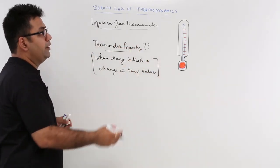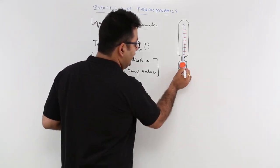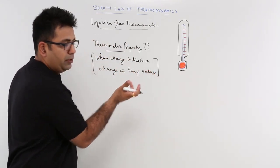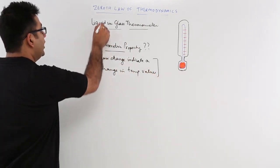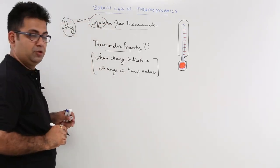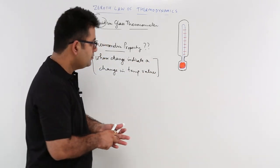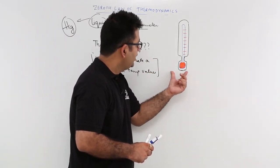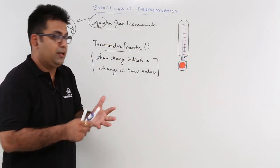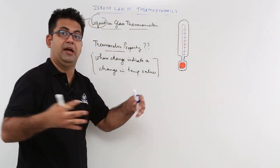What is the thermometric property for a liquid-in-glass thermometer? The liquid in this red-colored bulb is very commonly mercury, so this is a mercury-in-glass thermometer. When this mercury becomes hot, it starts to rise up this tube — it starts to expand.